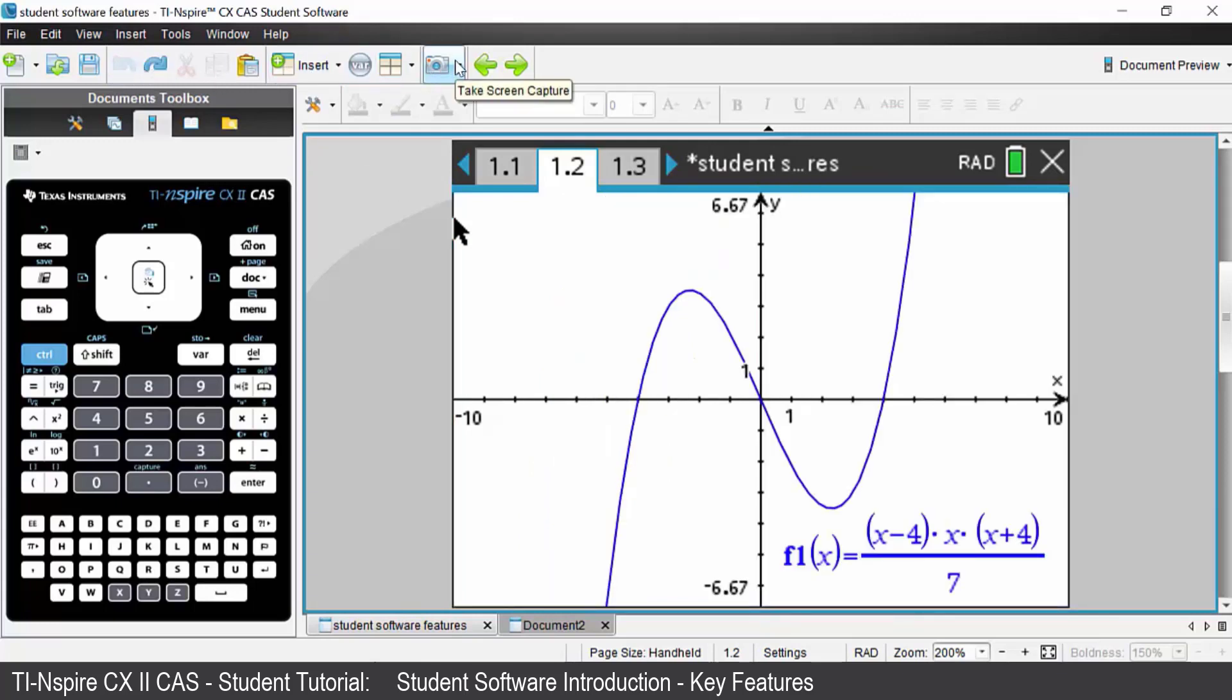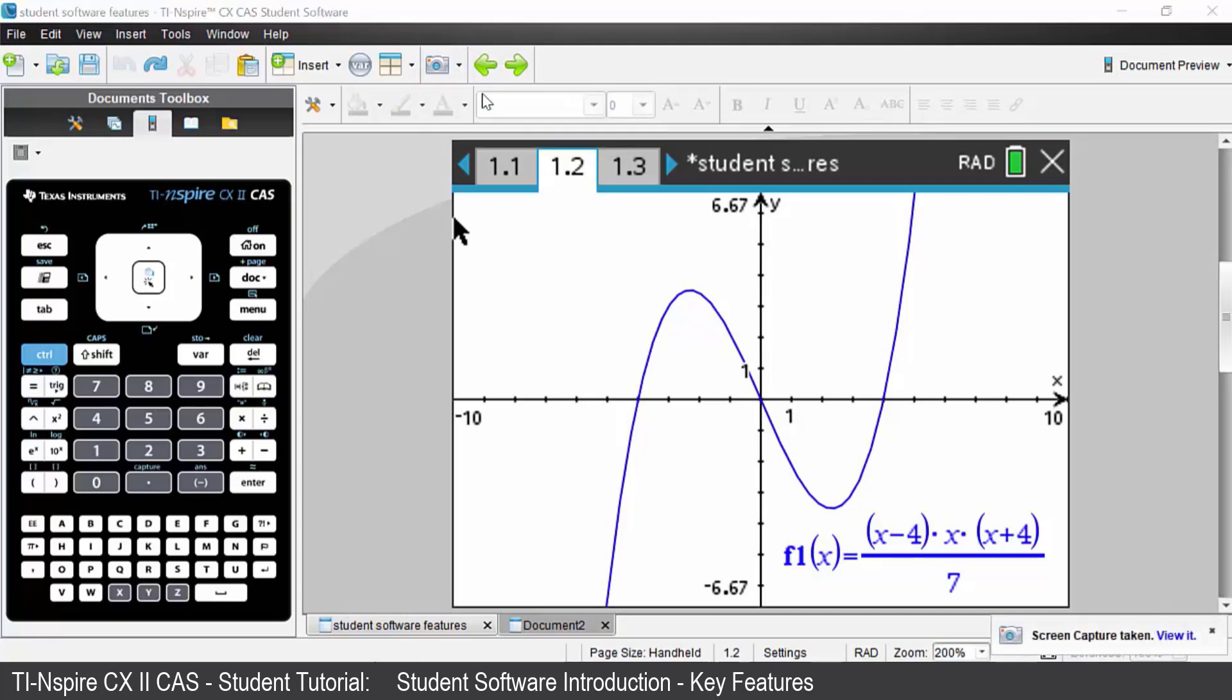The little icon of the camera there will take a screen capture for you and if you click on that there is a shortcut which is CTRL J on your keyboard. So if we do CTRL J it has taken a screen capture.